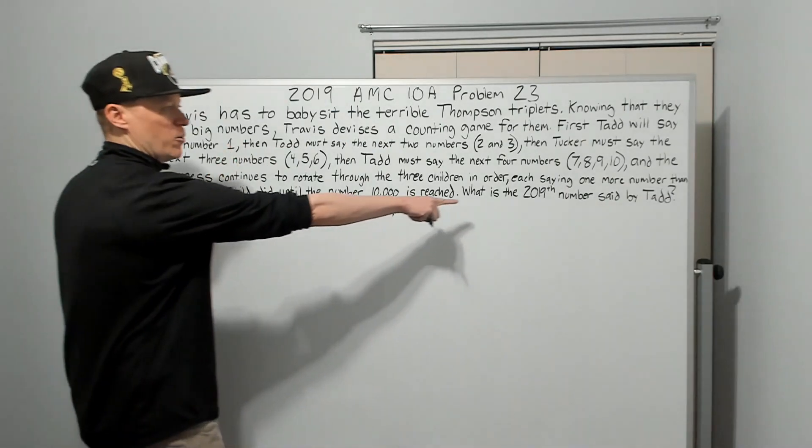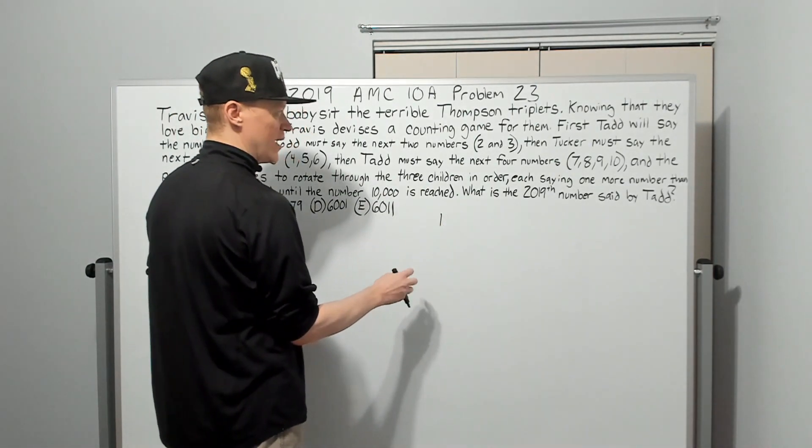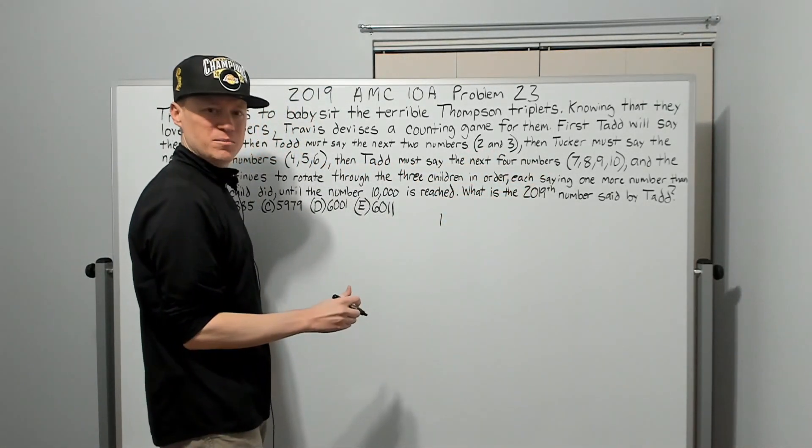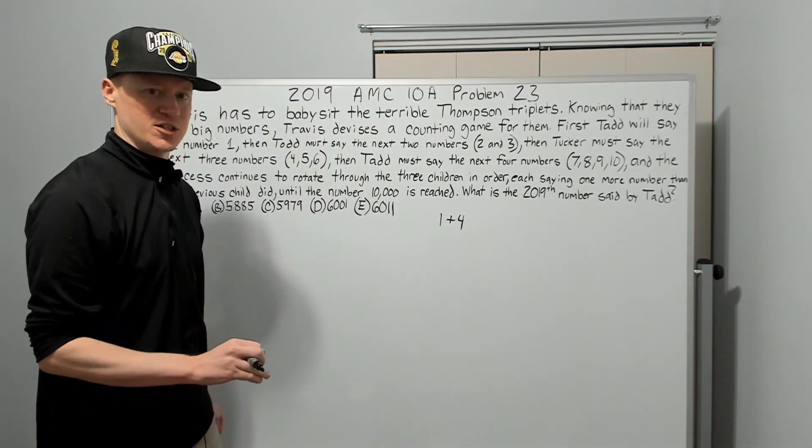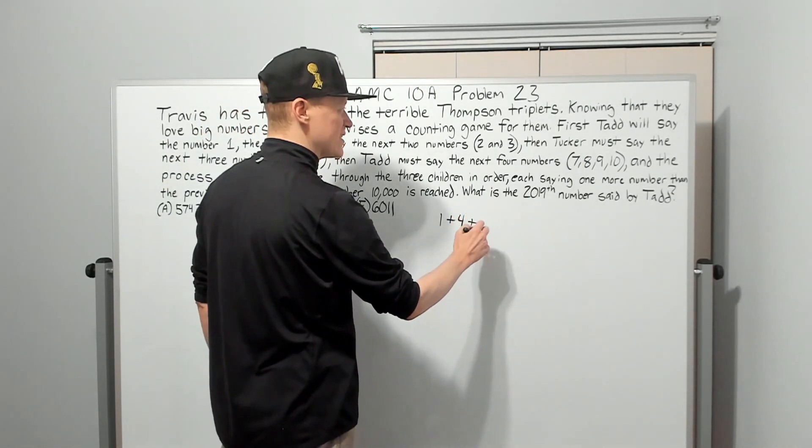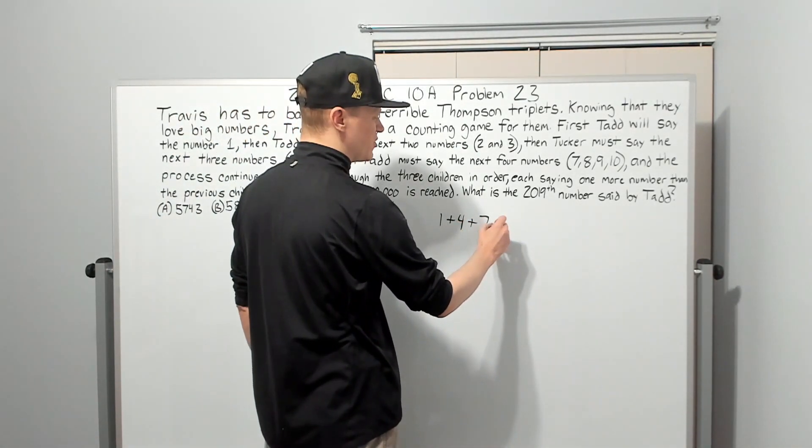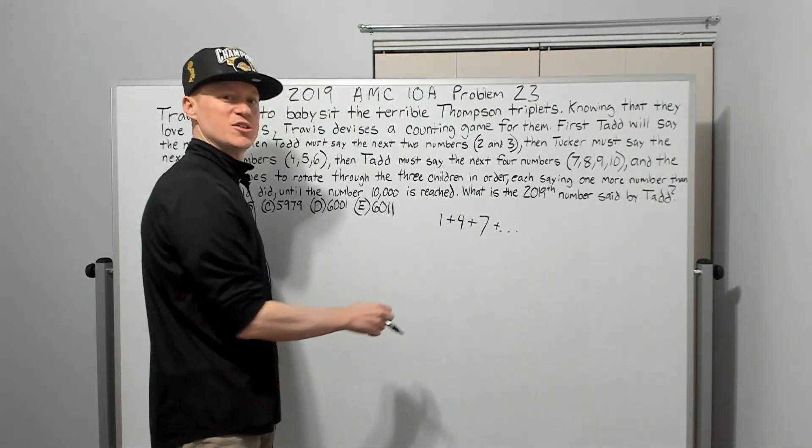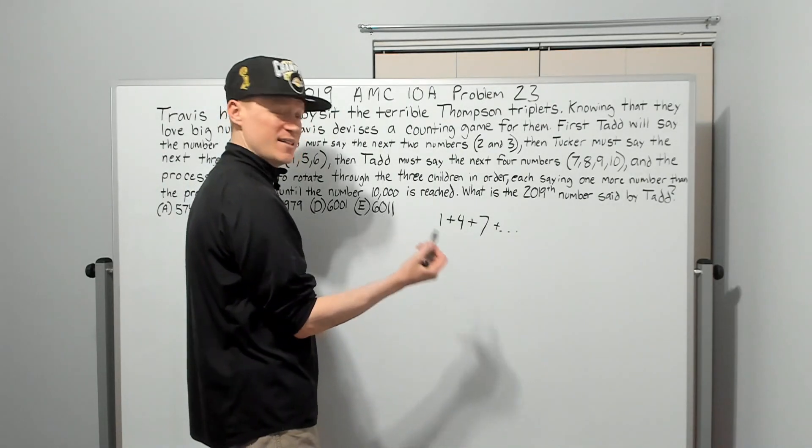Moving on with the actual problem. So focusing on Tad, we want to know the 2019th number said by Tad. So Tad is going to say the number 1, right? And then they're going to say 2 numbers. Tucker says 3 numbers. And then Tad's going to say 4 numbers. So just focusing on how many numbers Tad's saying, not what the numbers are, right? We can add 1 plus 4 plus, his next time he says it, he'll be saying 7 numbers, correct? And all the way to, we don't know where. But we see it's going to be an arithmetic series of how many numbers he has said.